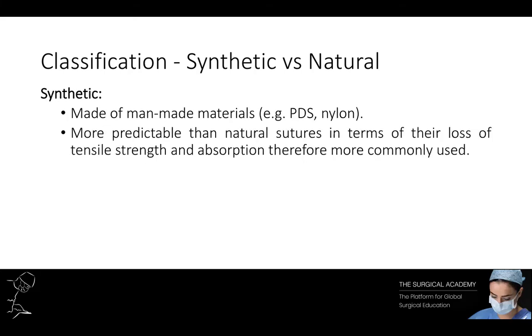Synthetic sutures are made from man-made material. Examples include PDS and nylon. They tend to be more predictable than natural sutures, especially in terms of loss of tensile strength and absorption.